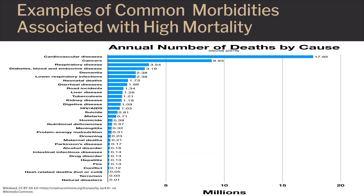This slide profiles the most common types of mortalities across the planet. Think of this figure as illustrating those types of diseases — morbidities — that cause mortality in the most amount of people.